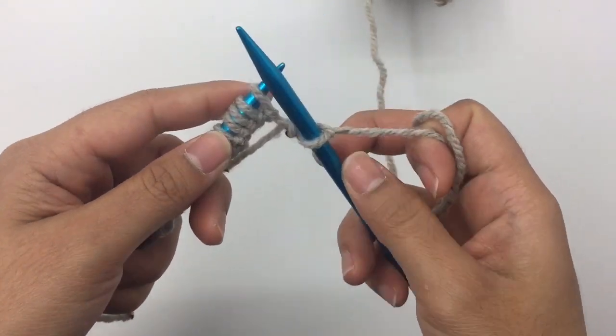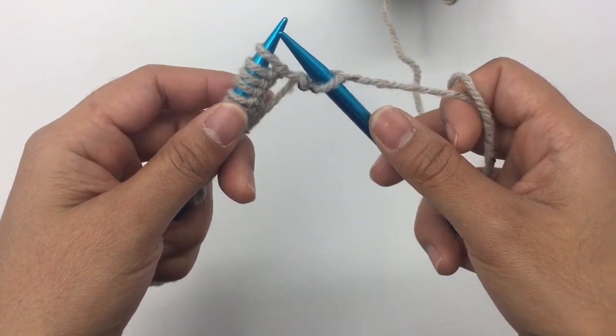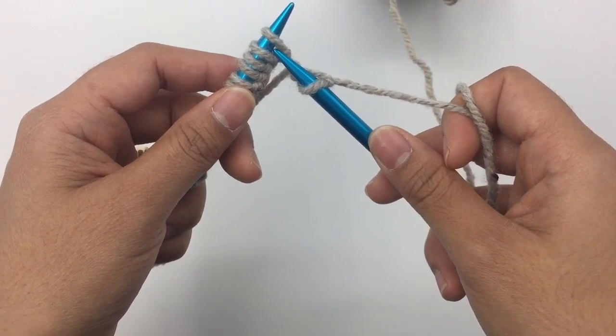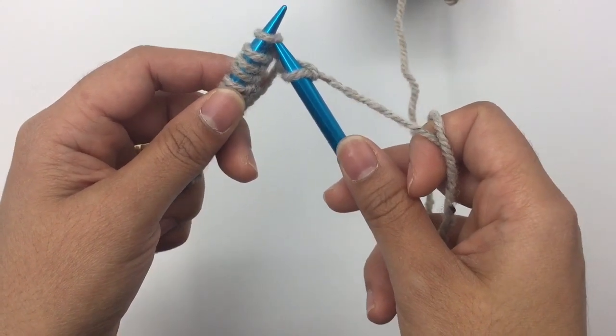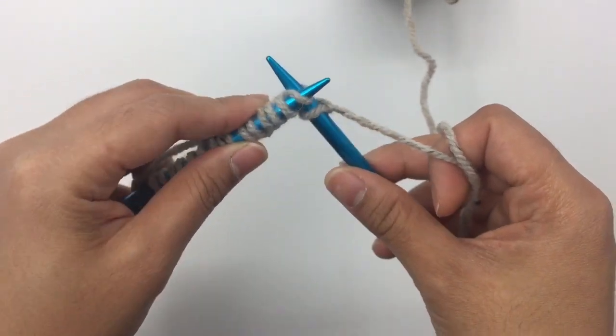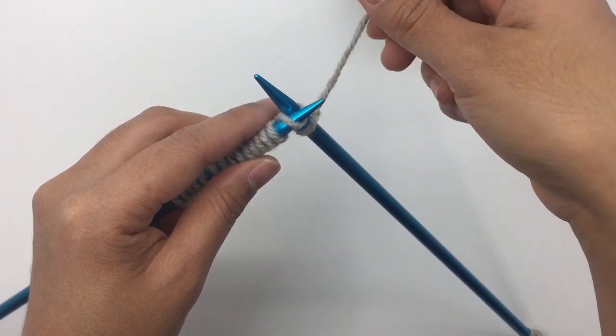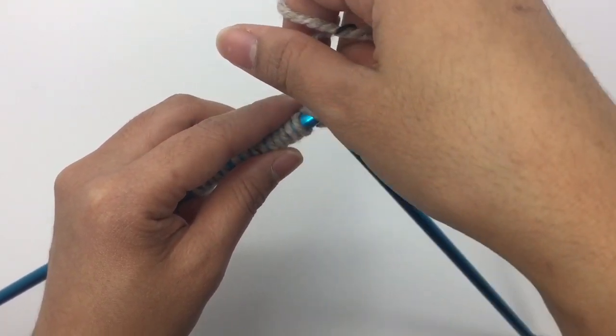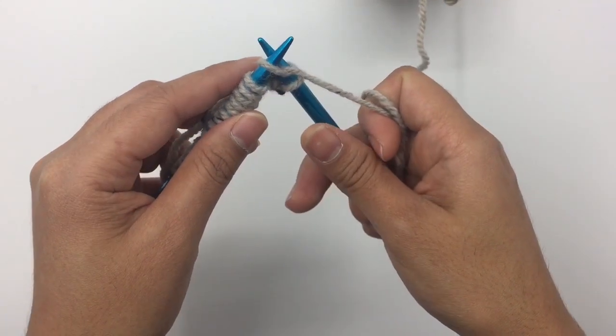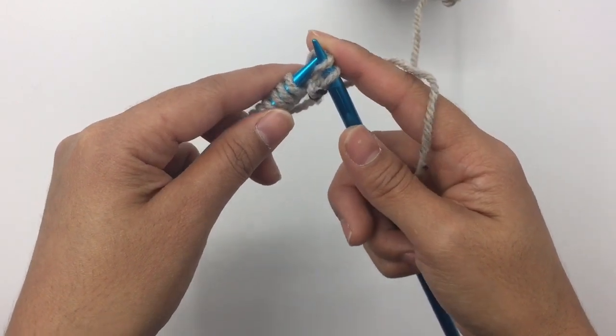We're going to do that again. Insert your right needle into the front loop of the left needle like so, and then bring your yarn and wrap around the right needle counterclockwise. Then bring that loop up and drop the stitch.